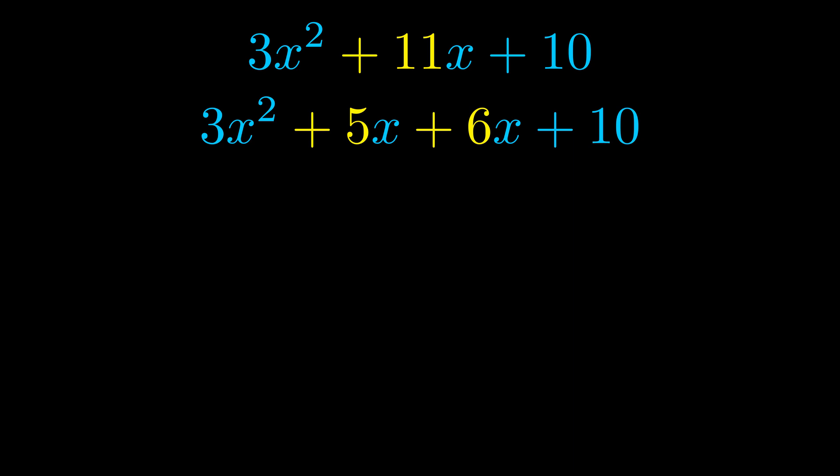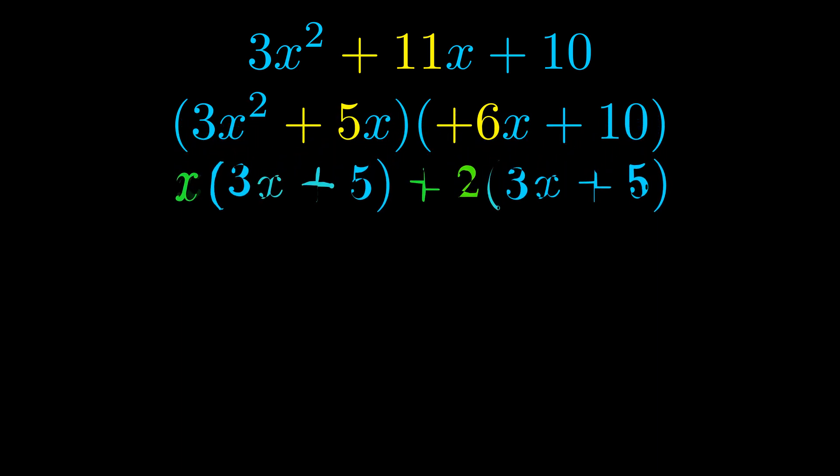Once we've done this we go ahead and put parentheses around the first term and the last term and we do that so that we can take the greatest common factor out of both terms. We can see the greatest common factor is now outside in green.